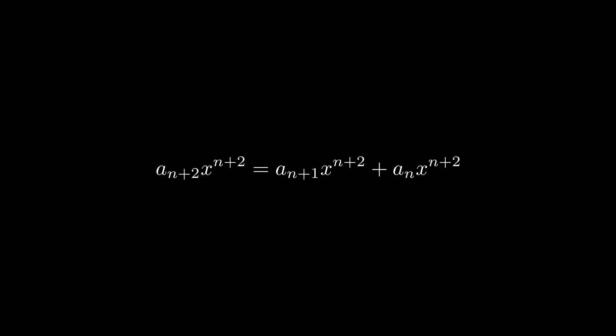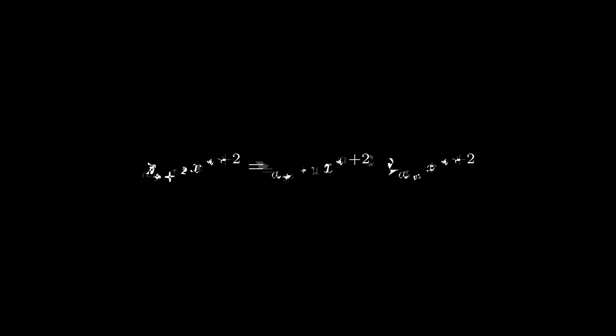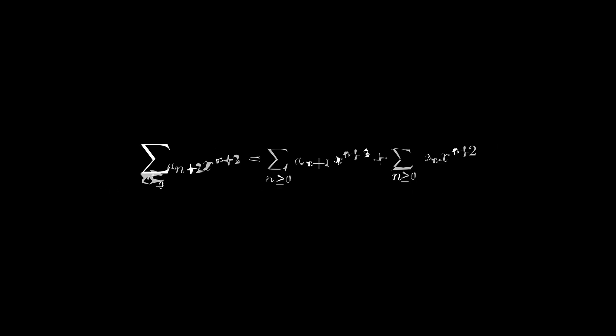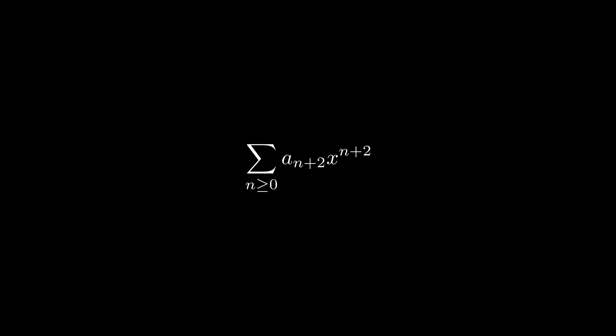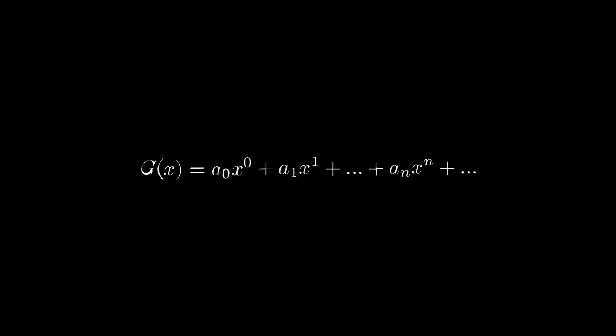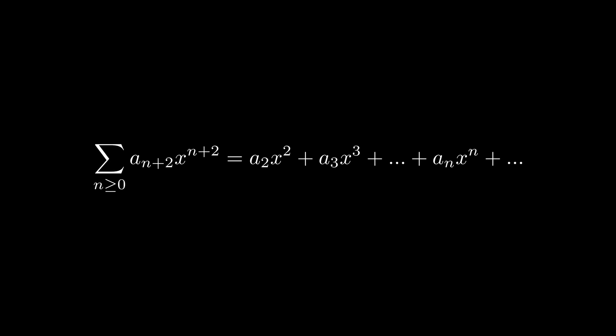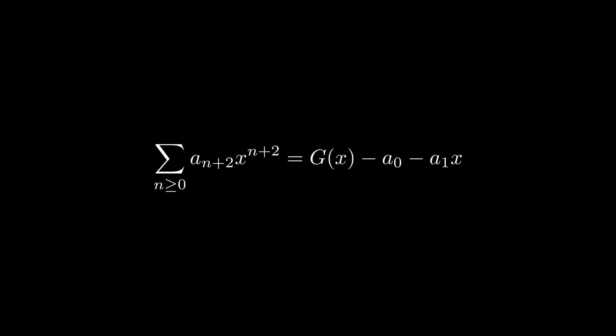First, we multiply both sides of the equation by x squared. Then we sum over both sides. Now let's grab the first term on the left side. One notices that this looks pretty familiar to the power series we just defined, only this has n+2 instead of just n. If we go back to the power series and write it out term by term, and then do the same for the power series on the left side, we notice they look very similar. However, the power series on the left side starts with the third element of the generating function. So if we subtract the first two elements, we end up with the power series.